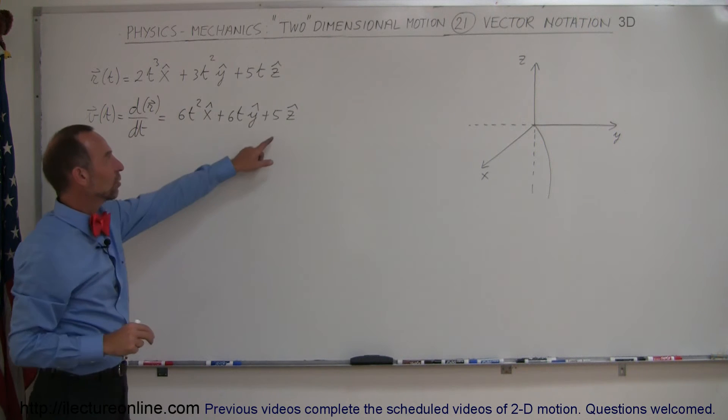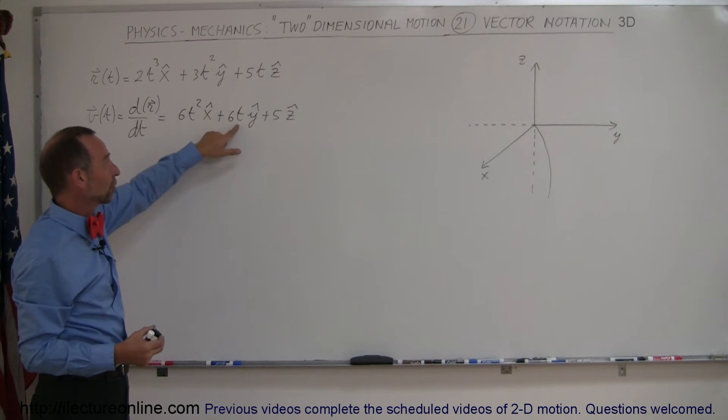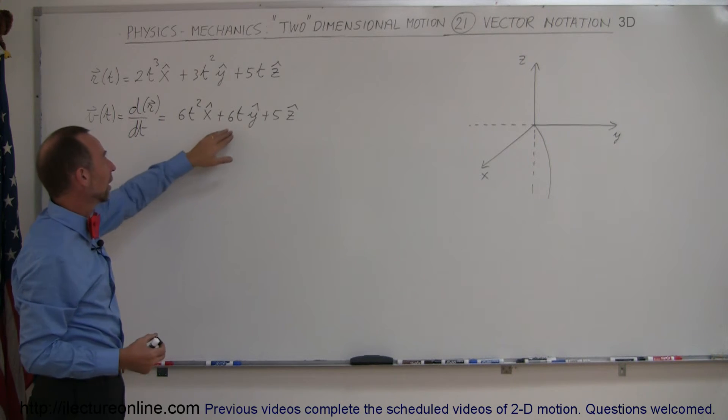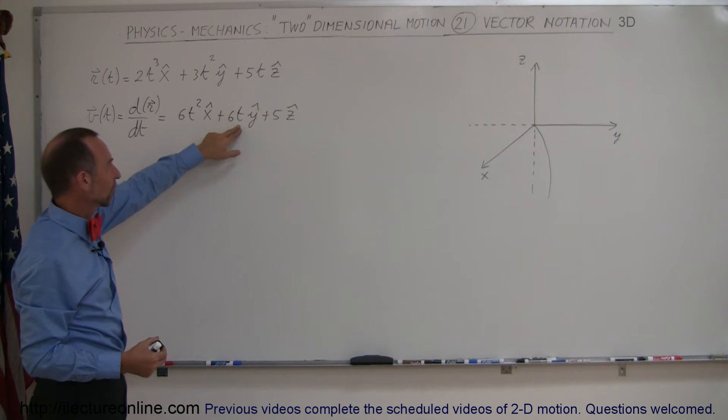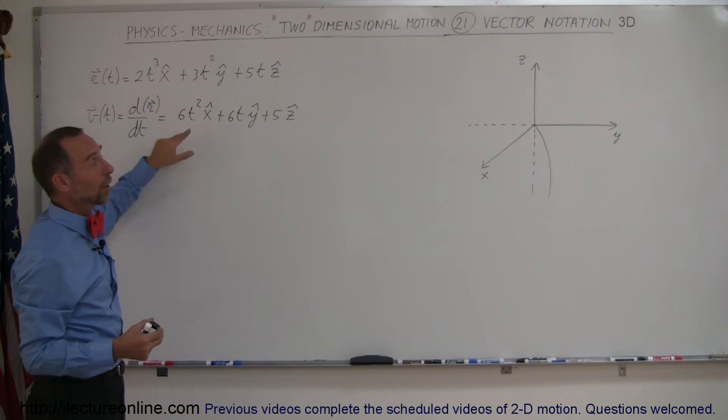That means in the z direction the velocity would be constant. In the y direction it would accelerate as a function of t to the first power, or increase as a function of t. And here the velocity would increase as a function of t².